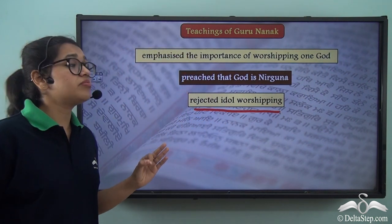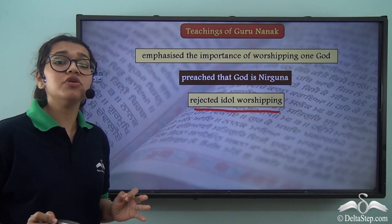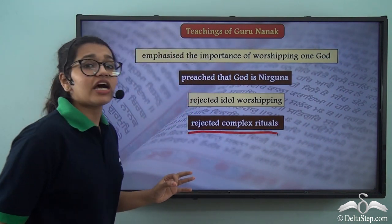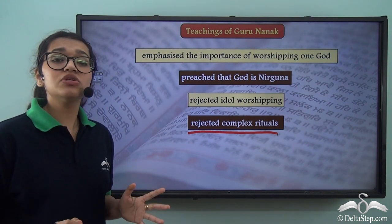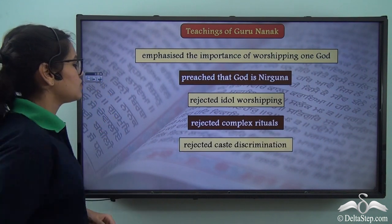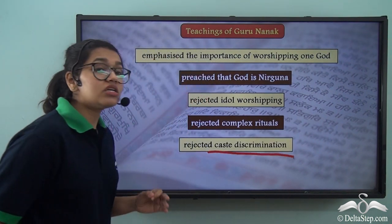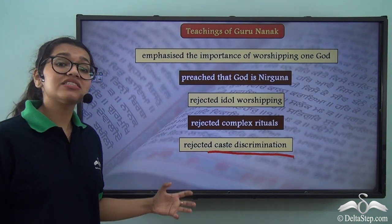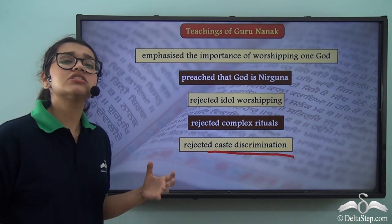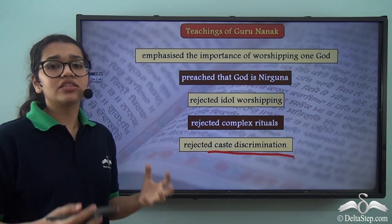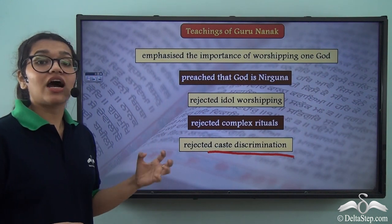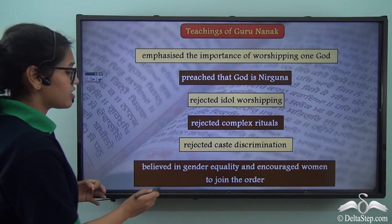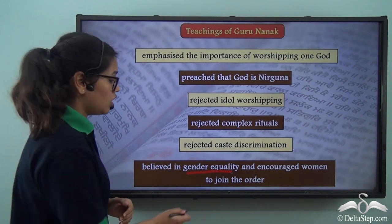Guru Nanak rejected the concept of idol worshipping, and even today you will not find Sikh people worshipping idols. Apart from that, he also rejected the complex rituals that existed in India at that time, saying they were completely unnecessary. He also rejected the caste system. He preached about equality, and the caste system was exactly against that — because according to the caste system, some people were more important and could exploit others. So he said that all of us are equal. He also believed in gender equality and encouraged women to join the order.